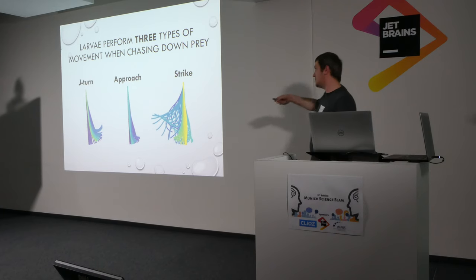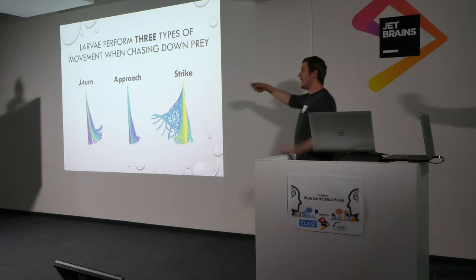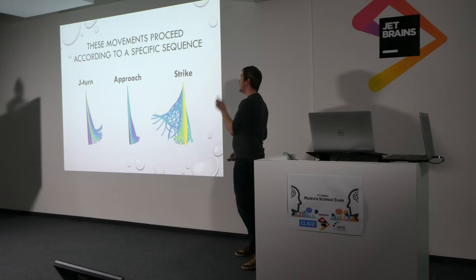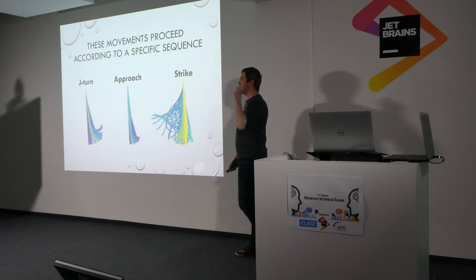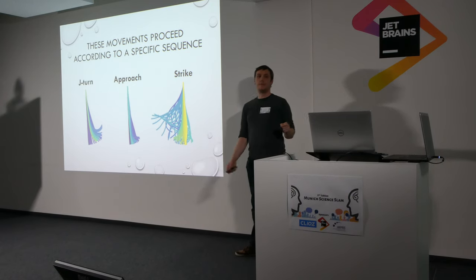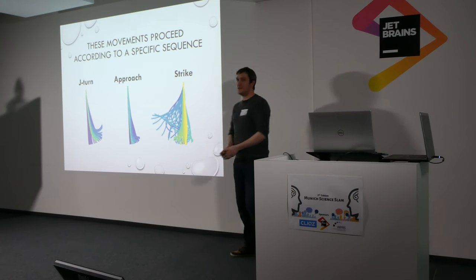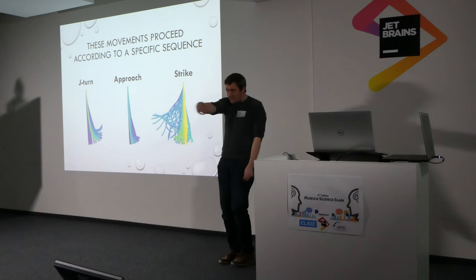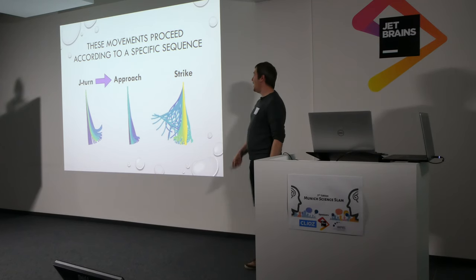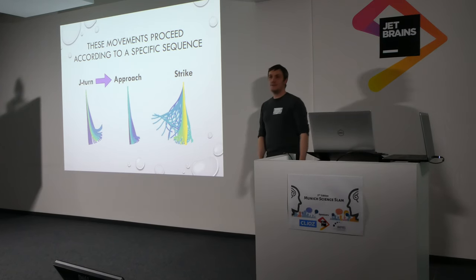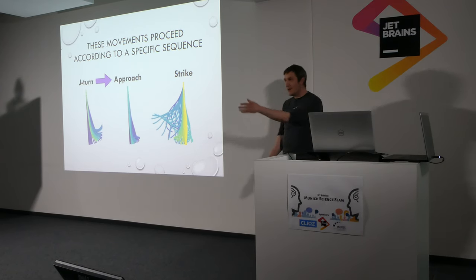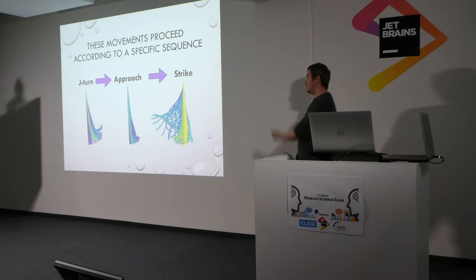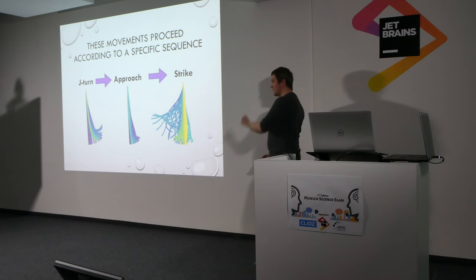But the fish don't just do these things at random — they proceed according to a very specific sequence. They always start off by doing these little J-turns. After that, they move to doing these small approach spoons, and then at the end, they do these big strikes.